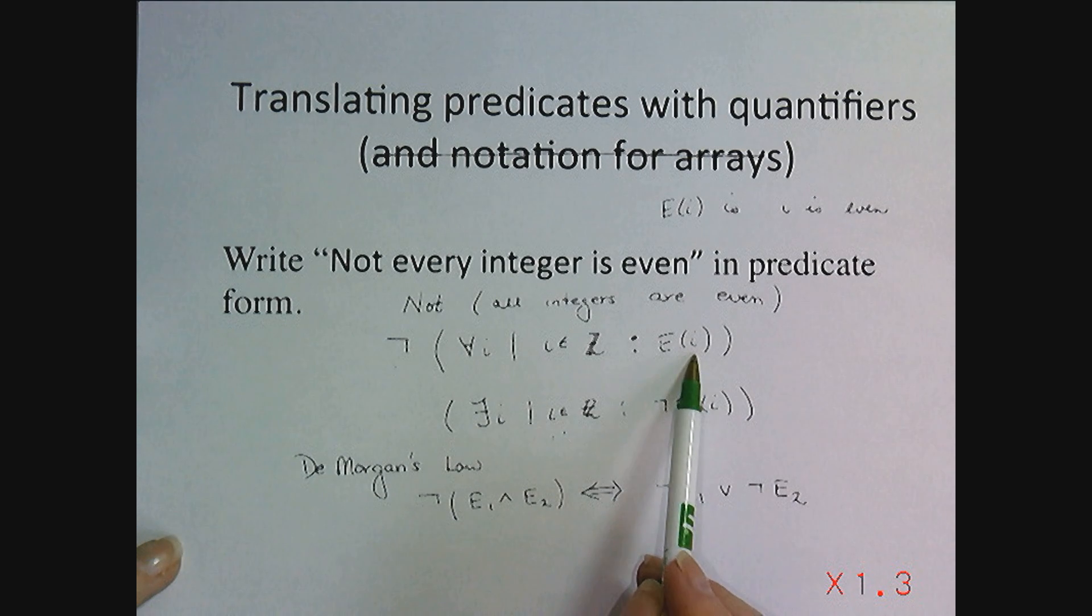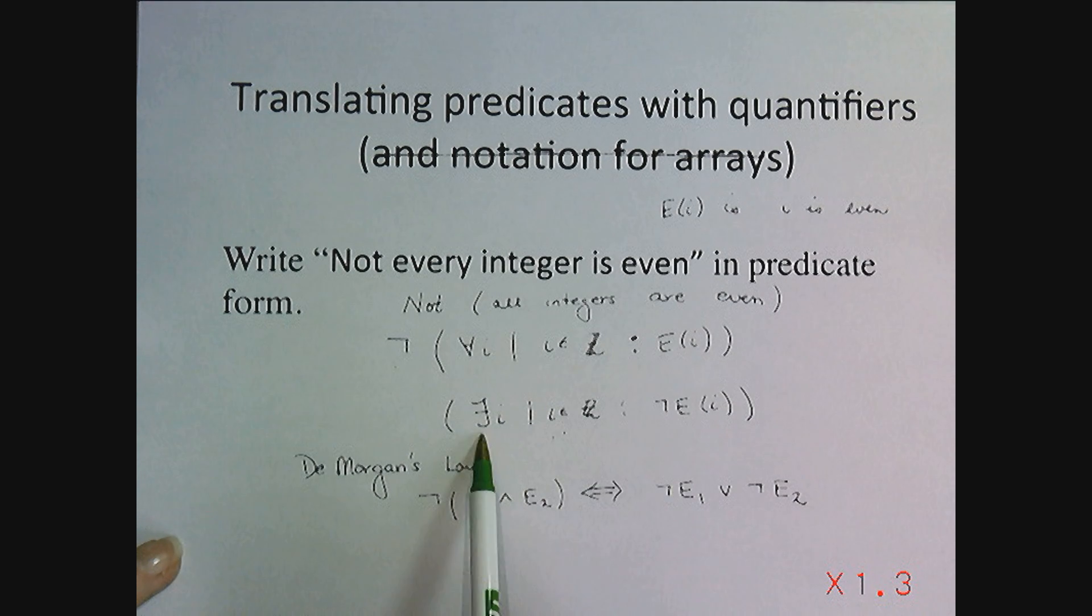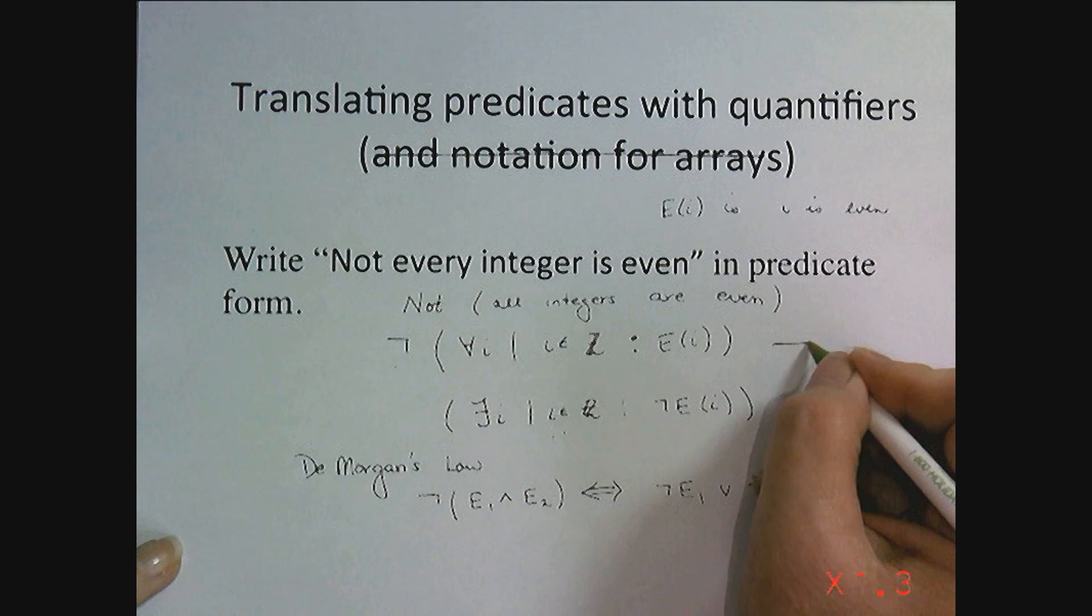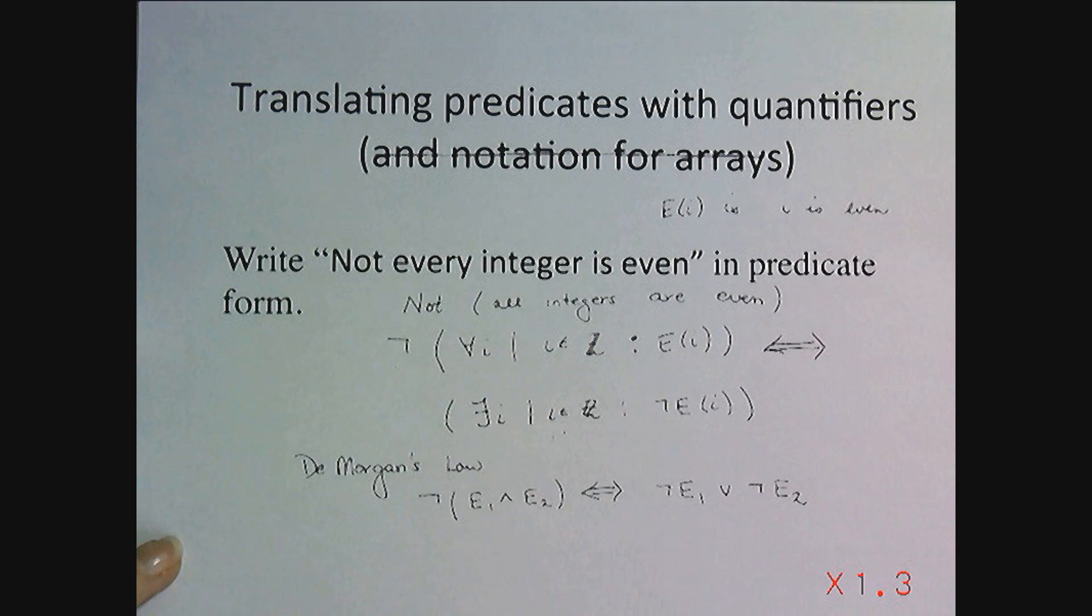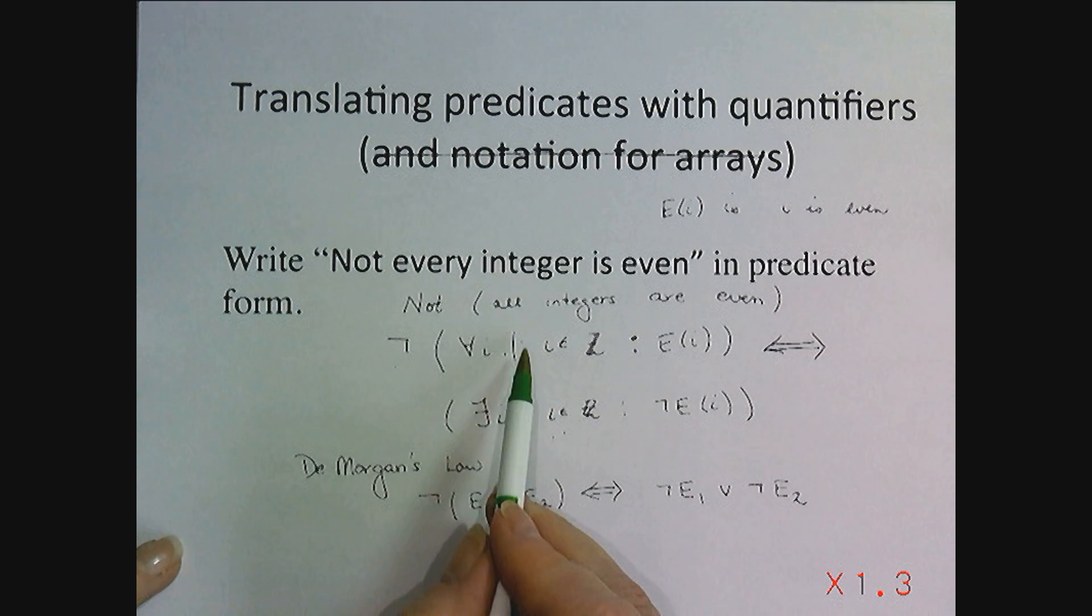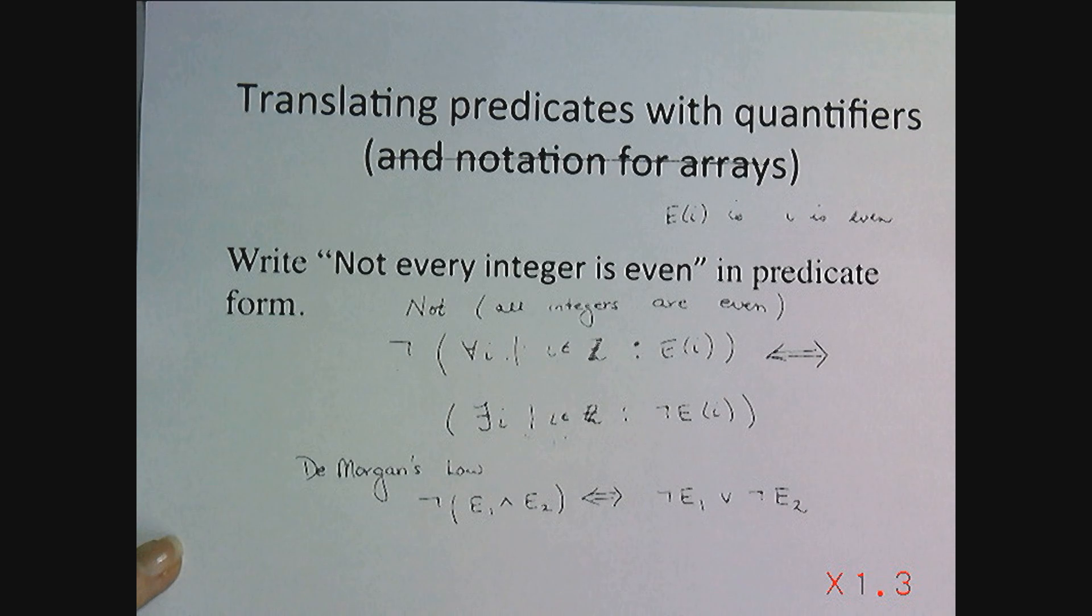Not for all integers being even is the same as there exists at least one of them that's not even. And that would mean by an extension of De Morgan's law, these two quantifications are exactly the same. So if you have not for all, even is the same as there exists one, at least one that's not even.